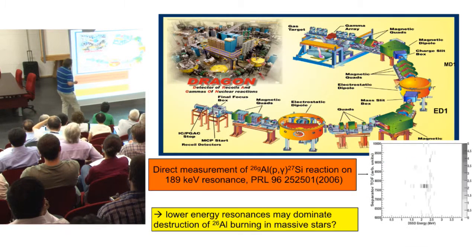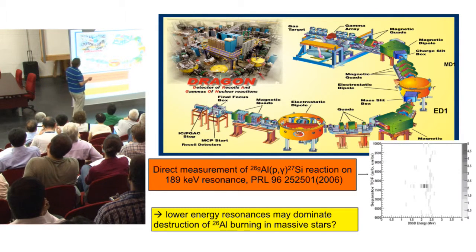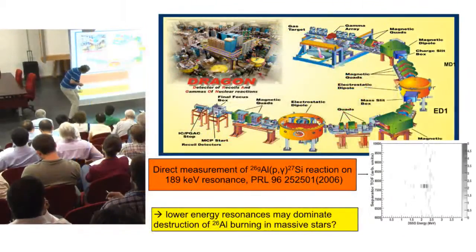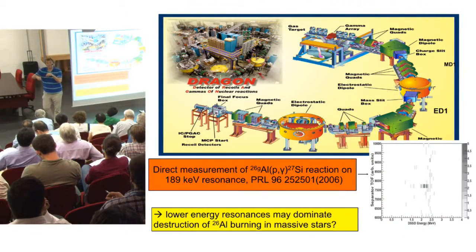What have people done? A wonderful experiment was done about 10 years ago at the DRAGON separator, which did a direct measurement of the p-gamma reaction. Remember, aluminum-26 has a lifetime of a million years, so it's not so difficult to produce. They were able to make a measurement of the resonance strength at 189 keV. Interestingly, that's almost certainly the critical resonance for Nova. But if Nova aren't the main source of aluminum-26, the most important question is: could there be lower energy resonances during the quiescent hydrogen-burning period in the evolution of this massive star?